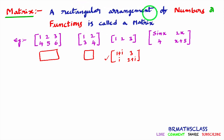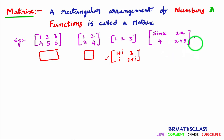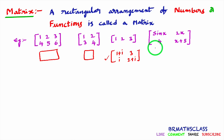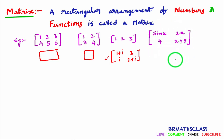A rectangular arrangement of not only numbers but also functions is called a matrix. Observe this: sin x is a function, 2x is a function, 4 is a constant function. So is this a rectangular arrangement? Yes. So you have learned the definition of matrix.